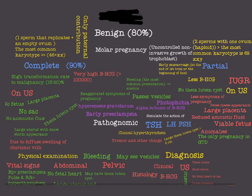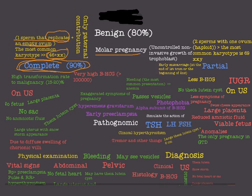In the last video I forgot to say the most important thing about complete molar pregnancy: it is the result of one sperm that fertilizes and then replicates, so at the end there are two sperms that fertilize an empty ovum. The most common karyotype of complete molar pregnancy is 46XX, and because we have an empty ovum, we have only paternal contribution in complete molar pregnancy.